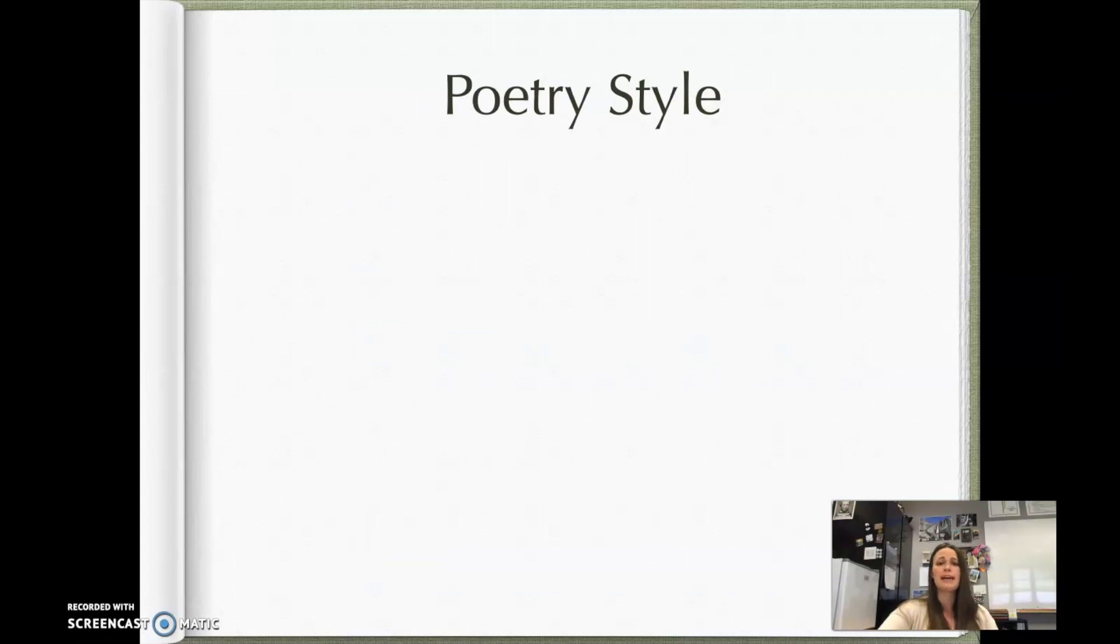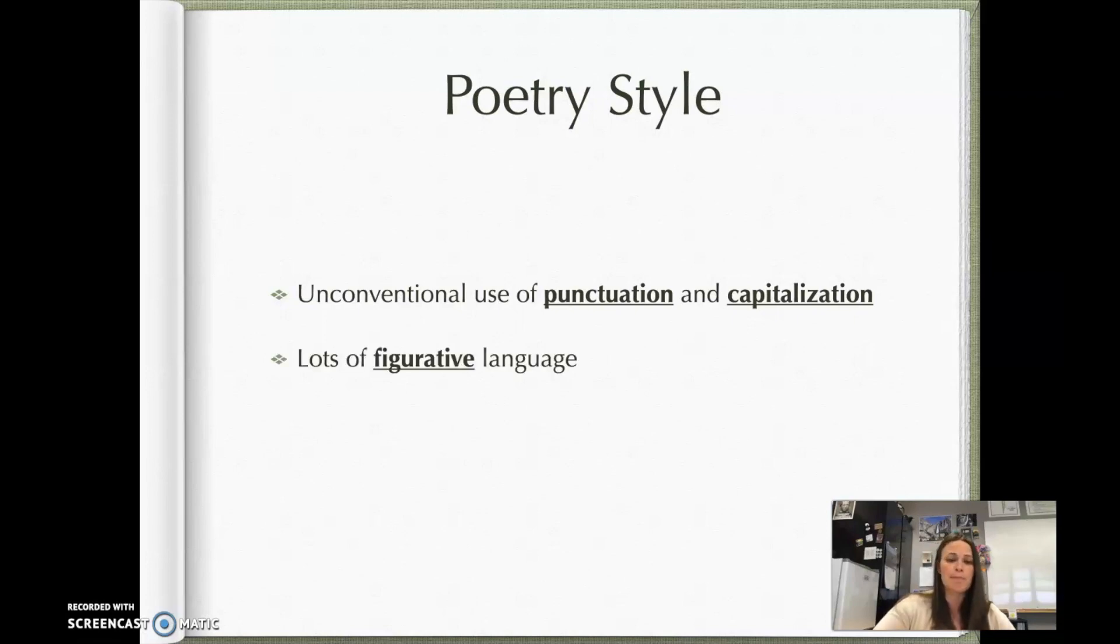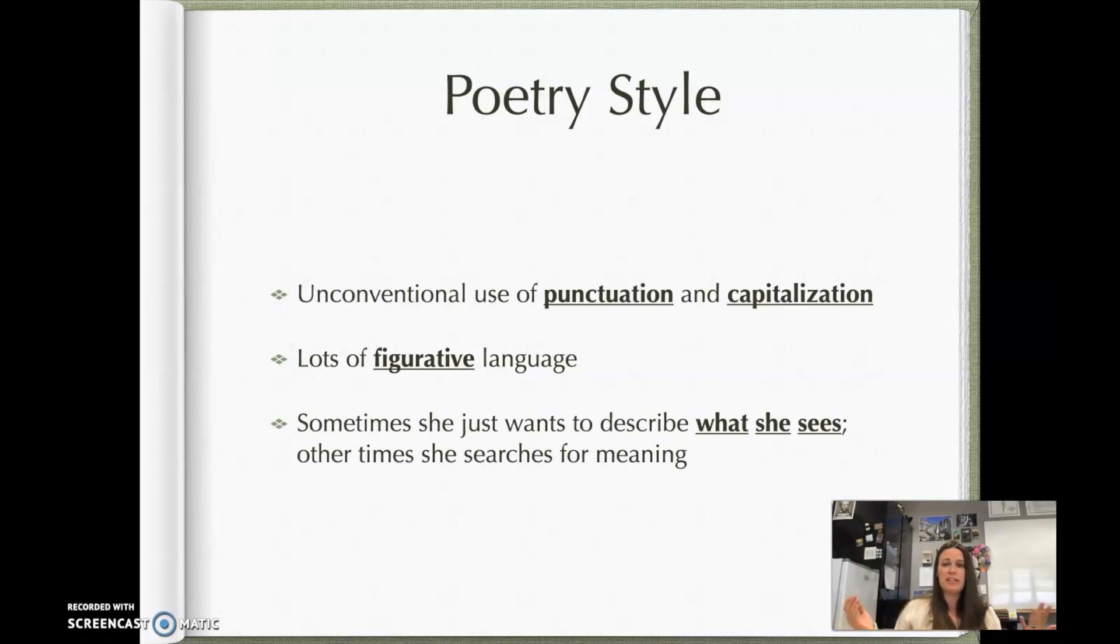Her poetry style, and the reason why it's unconventional, she uses some really odd punctuation and capitalization. So she doesn't necessarily follow the traditional rules of English language. In particular, she used a lot of dashes at the ends of her lines. And so she was afraid that people would not appreciate it and might look like she didn't know what she was doing. But she was concerned about the way that that would look. But that's what makes her poetry a little bit unconventional, especially for the time. She used a lot of figurative language.